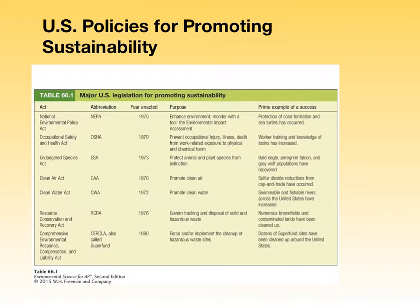Moving on to poverty and inequity. There's a classic environmental dichotomy: jobs versus the environment. Those primarily concerned with human well-being ask, how can we make demands for environmental improvements when there's so much poverty and injustice in the world? And those concerned with the environment ask, how can we focus exclusively on human suffering when an impoverished environment cannot support a healthy human population? Approximately one-sixth of the human population — more than a billion people — live in unsanitary conditions in informal settlements like slums and shanty towns. Roughly one-sixth earns less than a dollar a day, and one-third earns less than two dollars a day.